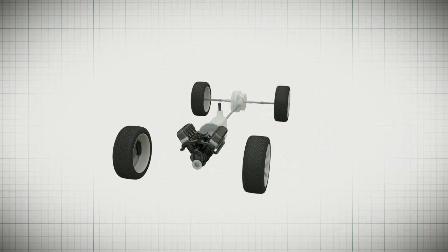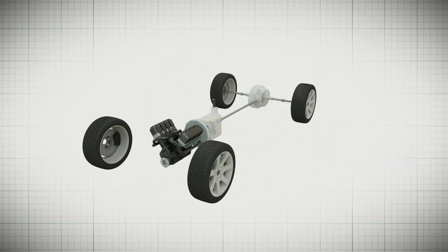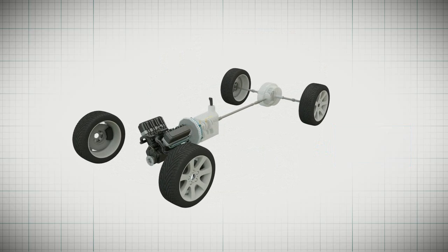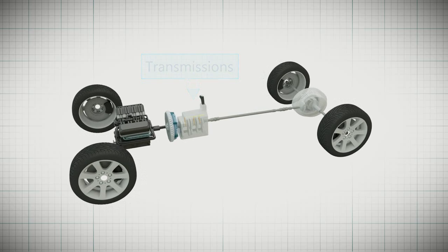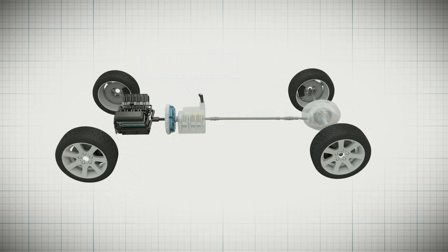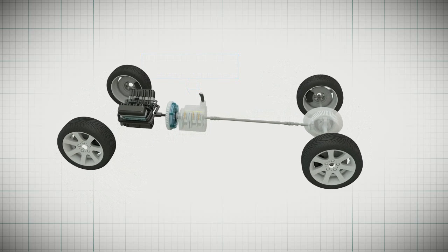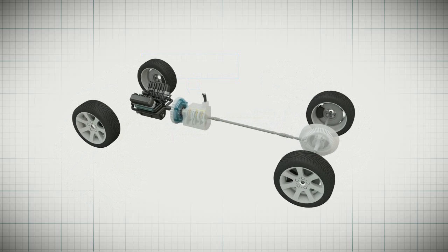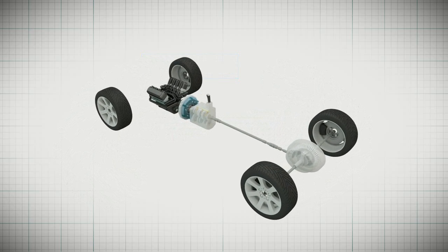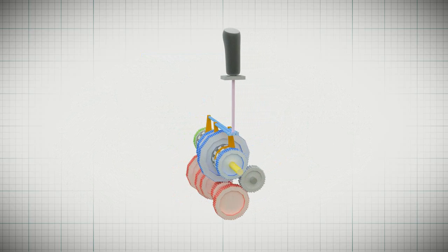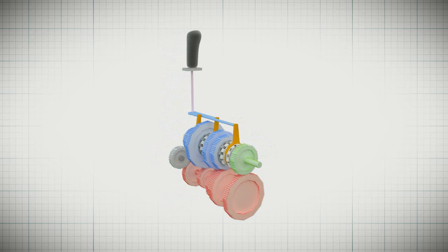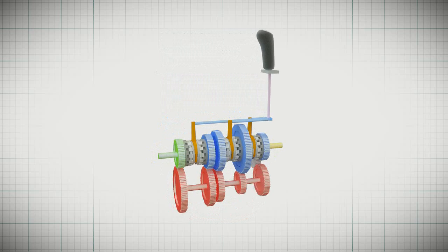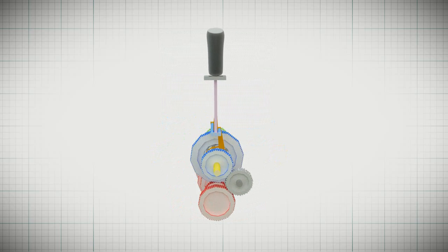Here is a simplified explanation of the working of transmission. The transmission is connected to the engine through the clutch, because of which the input shaft of the transmission turns at the same RPM as the engine. Here a very simple two-speed transmission is shown in neutral to understand the basic idea of a standard transmission.